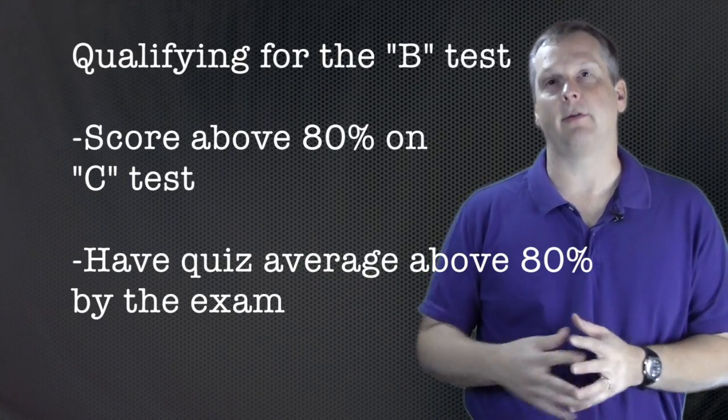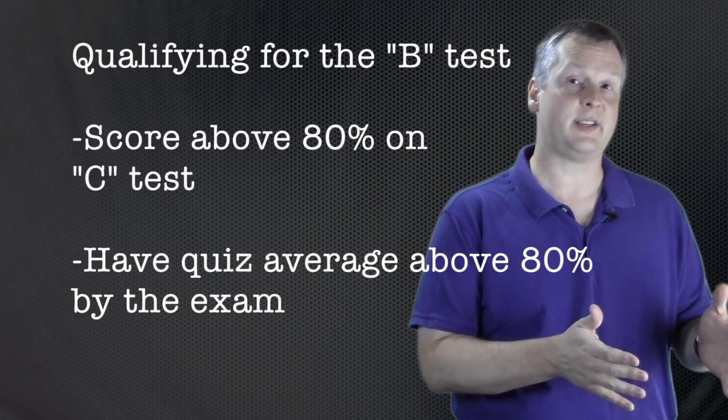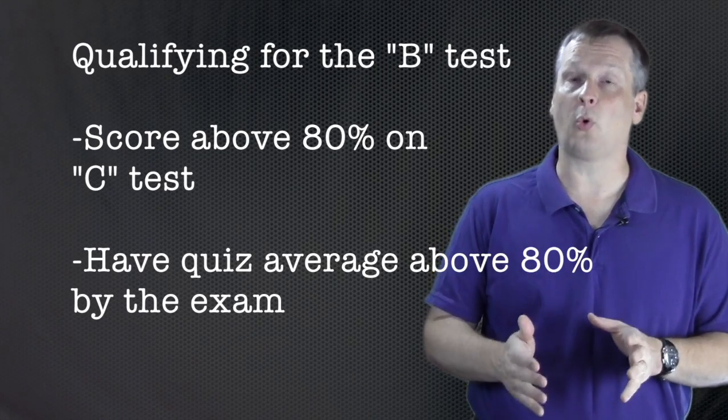At any point in the semester however, you can get on the B level by either scoring 80% on a C test or getting an 80% quiz average. Both of those will qualify you for the B test in the upcoming exam.